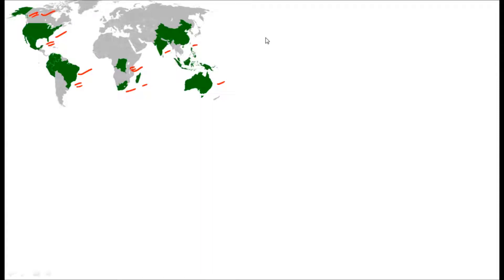First of all, the megadiverse countries title were given by the Conservation International organization. The Conservation International is the international body which gives the status of megadiverse countries to the country if they fulfill certain types of criteria. This Conservation International is established in 1987 and located in the USA.